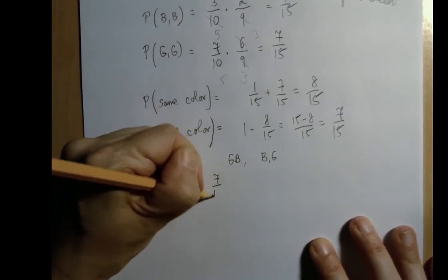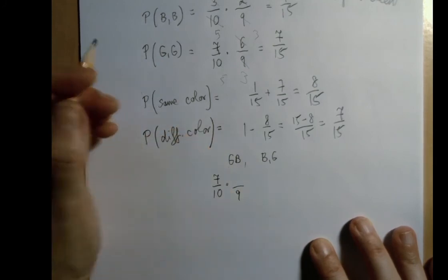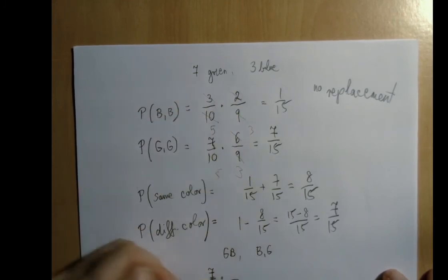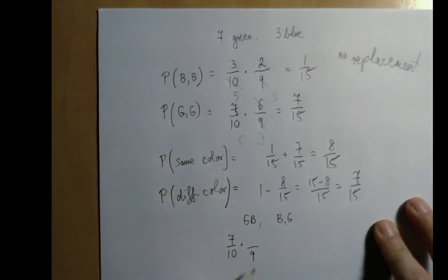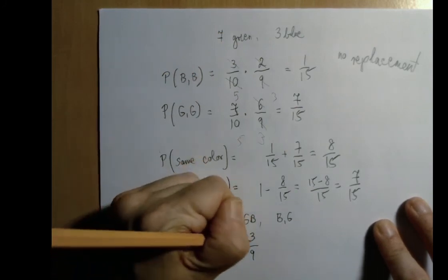So if we start with a green first, that's 7 out of 10. Now for a blue, there are only 9 marbles left in the bag, but all 3 blue are still in there, right? Because we pulled out a green first, right? So there are only 9 marbles left in the bag, but they contain all 3 blue, because we just pulled out a green one. So it's 3 out of 9.